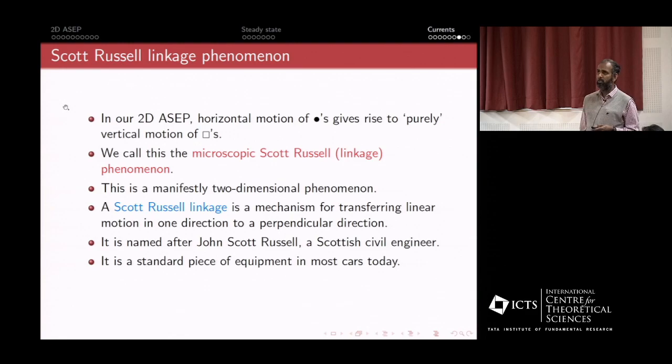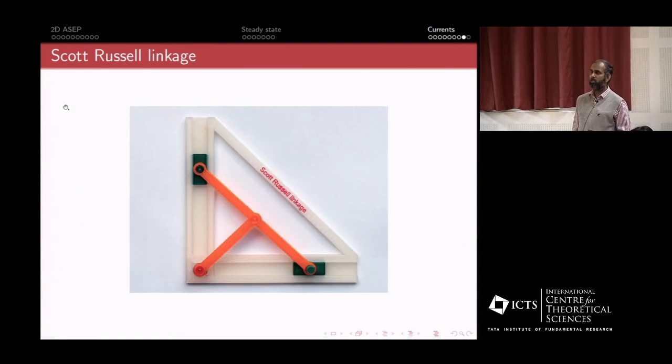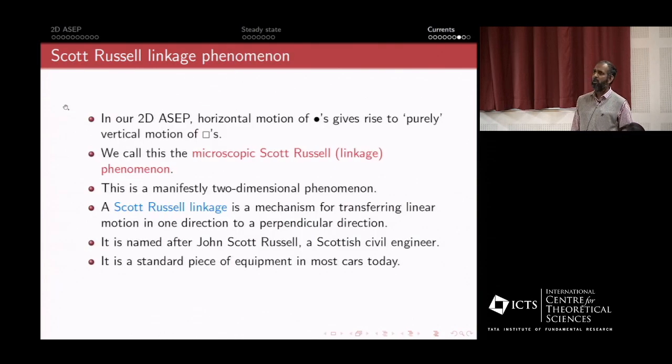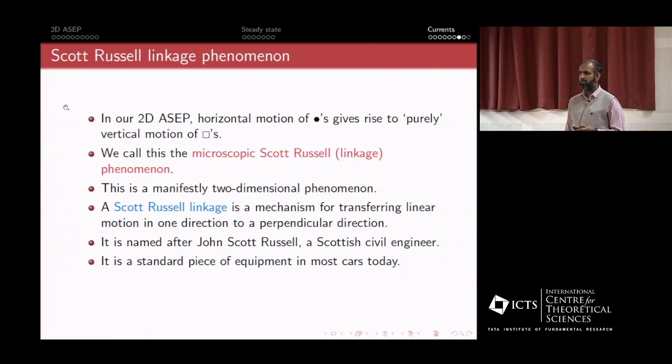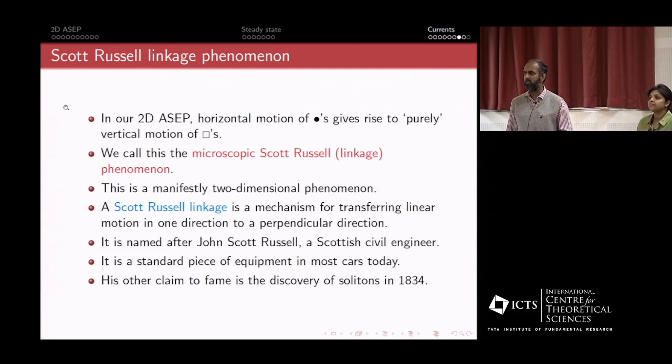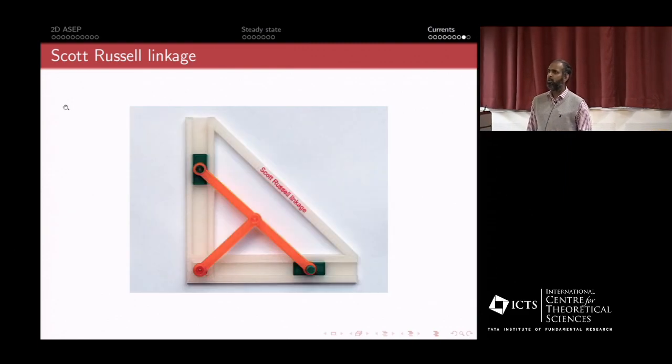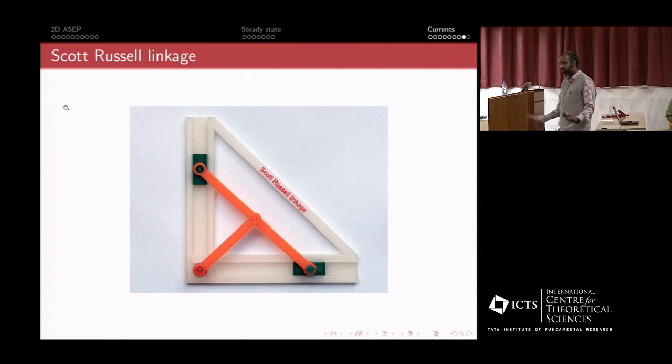Let me show you what the Scott Russell linkage is. You might have seen this in your engineering courses. This is a device like this: if you move this lower guy horizontally, this guy moves vertically. So it's a method for transferring linear motion in one direction to a linear motion in a perpendicular direction. That's essentially what is happening—the first class particles are moving horizontally and they make the second class particles move vertically by the exact same amount stochastically. This is named after John Russell and it's a standard piece of equipment. It's a non-trivial phenomenon. This guy's other claim is the discovery of solitons.